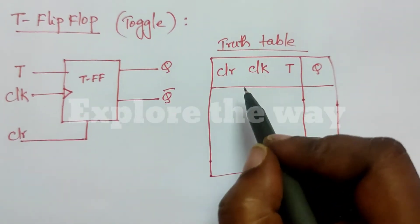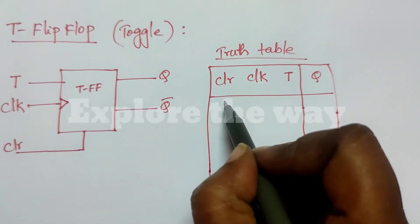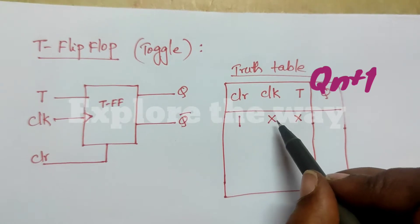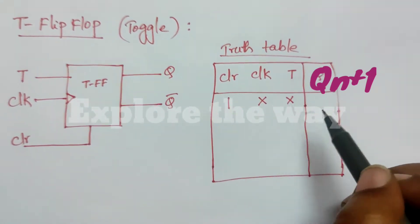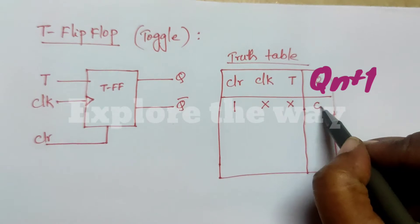Here when clear is 1 irrespective of the clock and T inputs, its output will be 0.